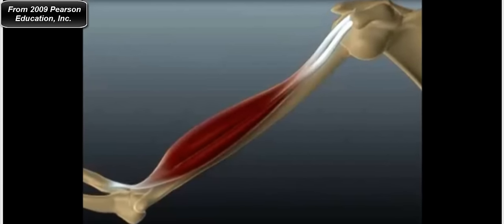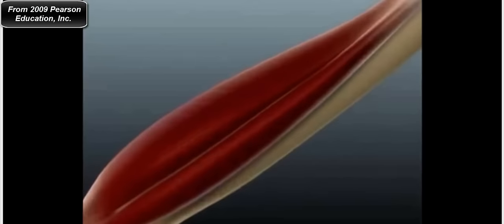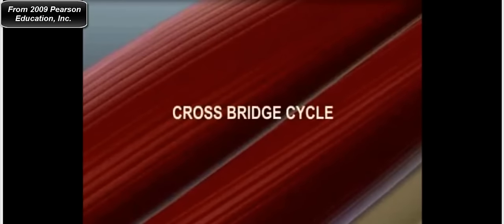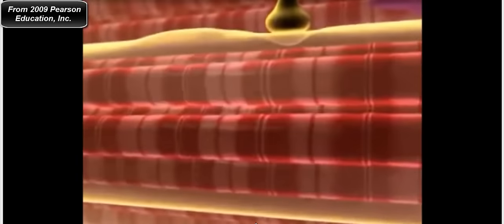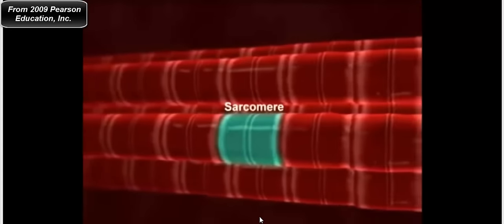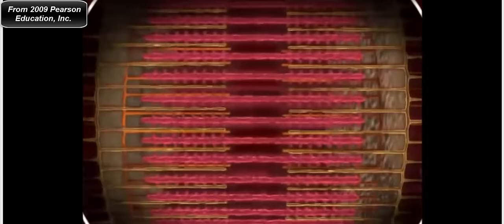Now we're zooming in on this muscle to look at the cross-bridge cycle. Here we're looking at myofibrils — this right here is the sarcomere, the functional unit. Zooming in further, these red filaments are called the thick filaments. The thick filaments have a major contractile protein referred to as myosin.